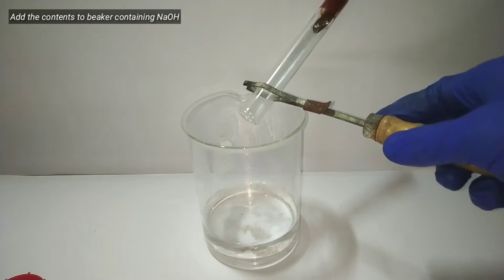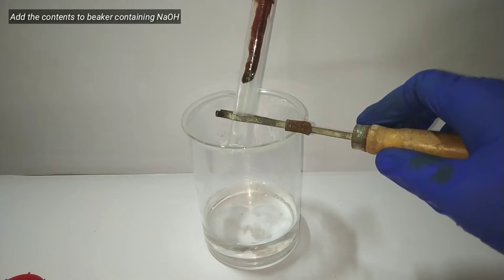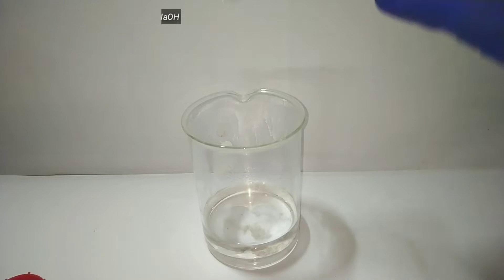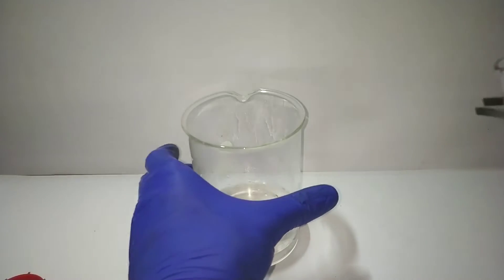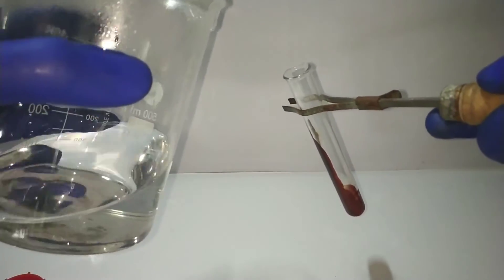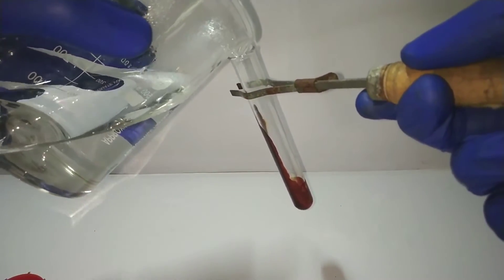Now pour the contents to 5 molar sodium hydroxide solution. I tried to pour my contents but it immediately got solidified, so instead I added sodium hydroxide into the test tube. Either way, we want the resultant solution to be alkaline.